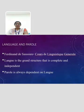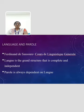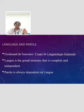The first topic is Langue and Parole. The discussion of langue and parole was first suggested by Ferdinand de Saussure and popularized in his work named Cours de Linguistique Générale. According to Ferdinand de Saussure, langue is the grand structure that is complete and independent. Parole is always dependent on langue.